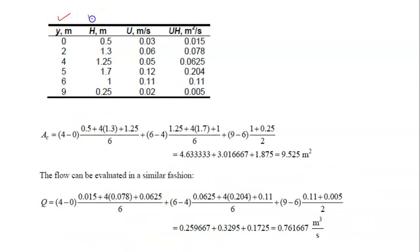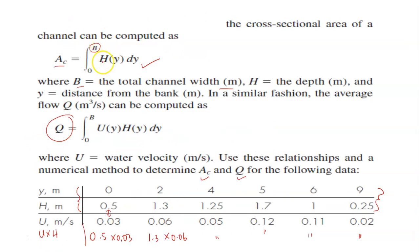So you have your Y, and you have your H, and you have your U. This is in the question, and this one you just calculated yourself for the UH to calculate for the flow rate Q. So for the first one, in order for you to calculate AC, which is this one, you just need to integrate H over dy.